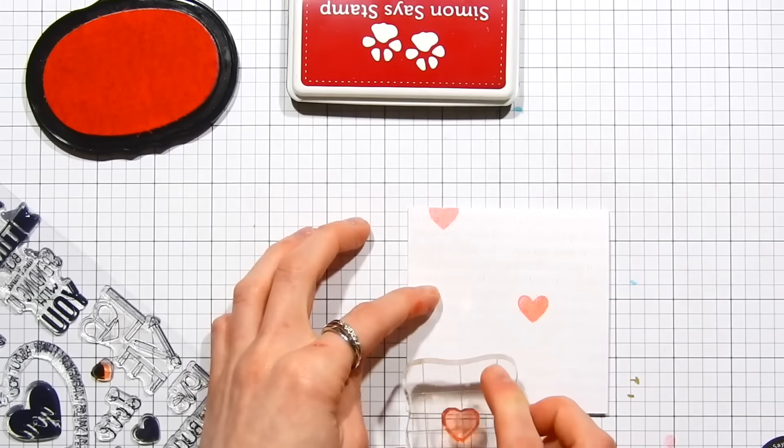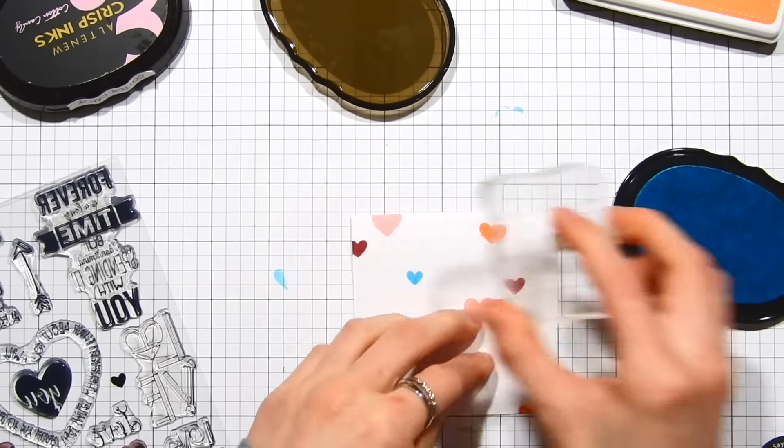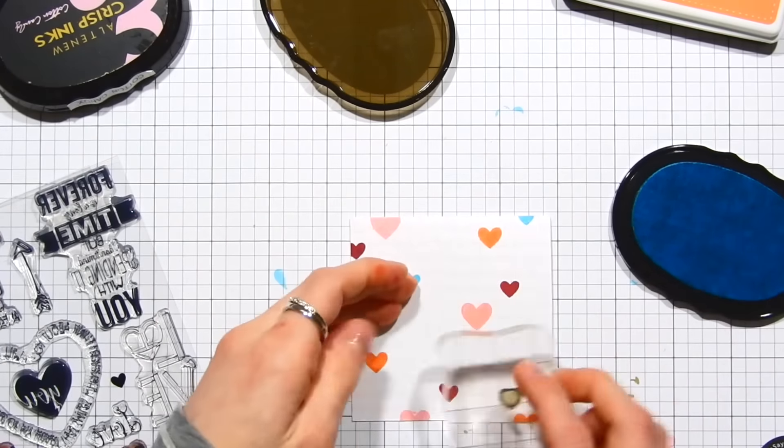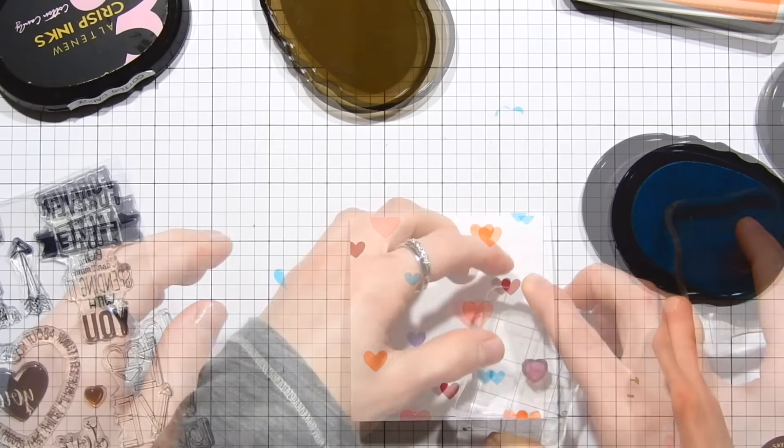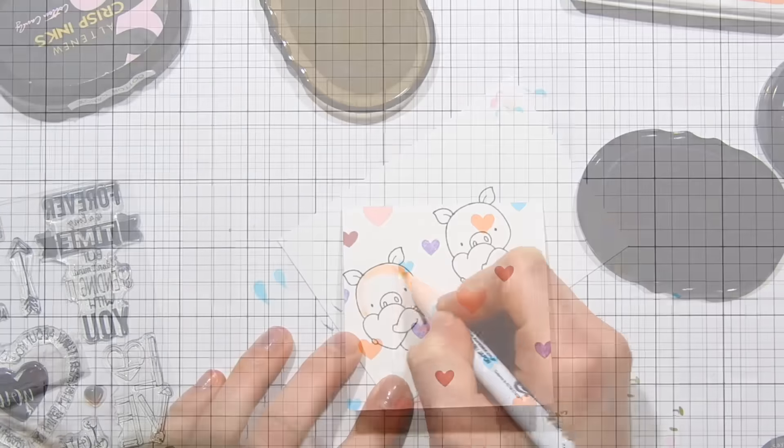Now I want to create a card that will coordinate with it on the outside. I'm stamping onto a three and a half inch square card base and doing the same exact technique by stamping the text background onto the white cardstock. Now I'm taking the hearts and stamping these all around the background.